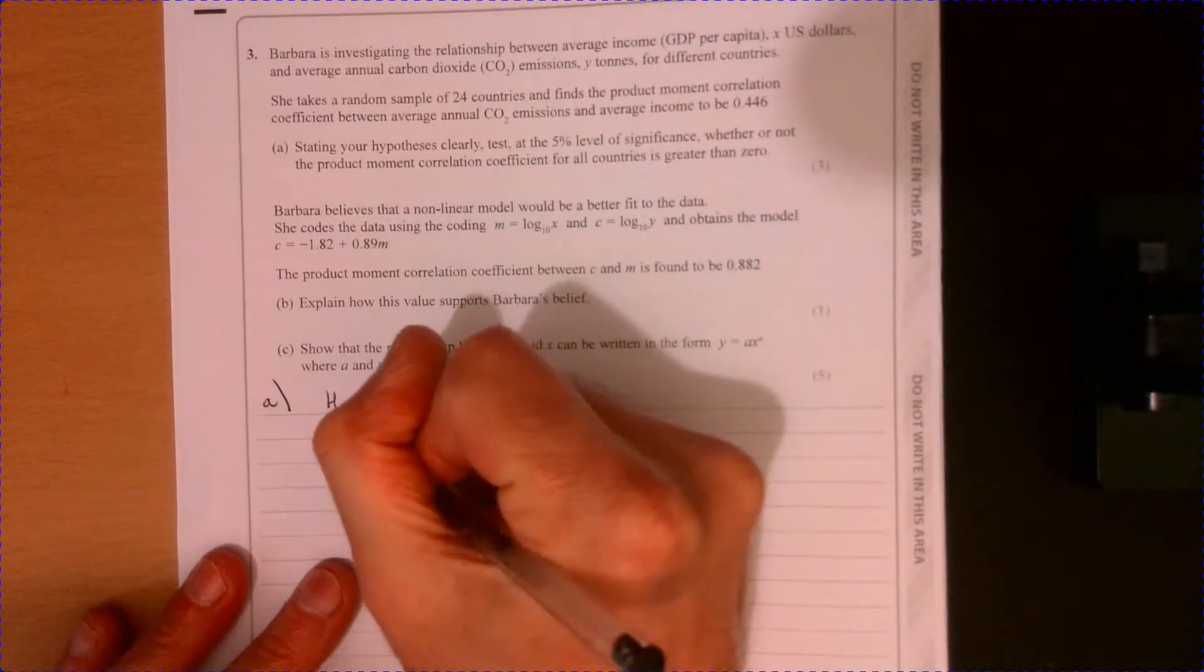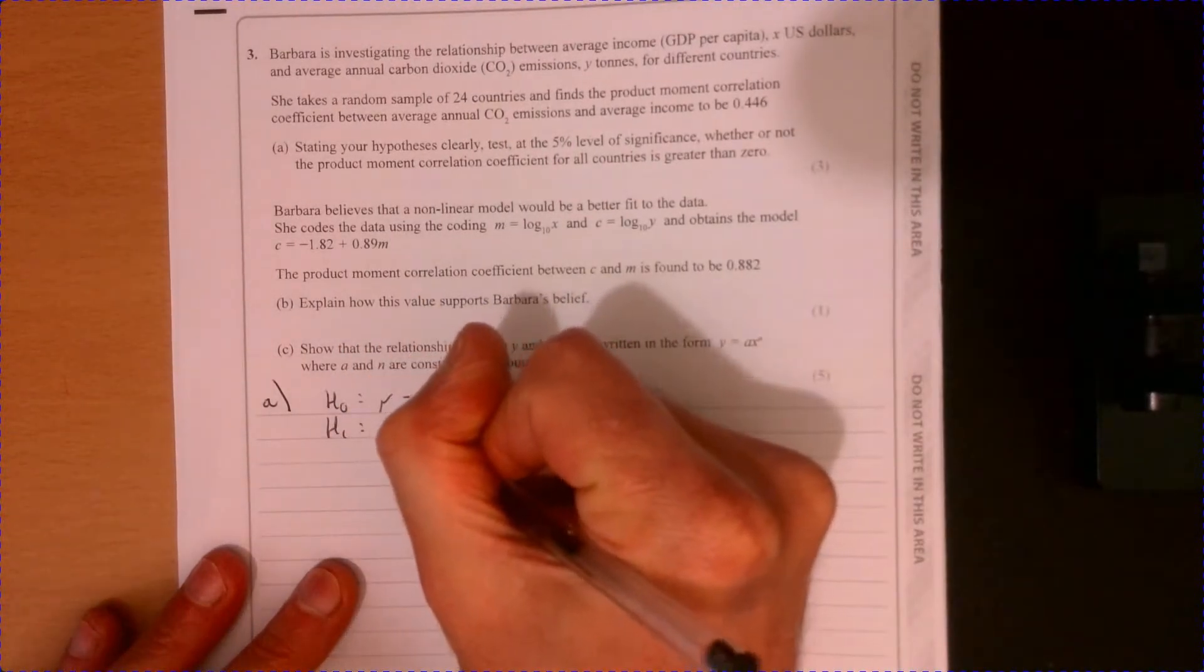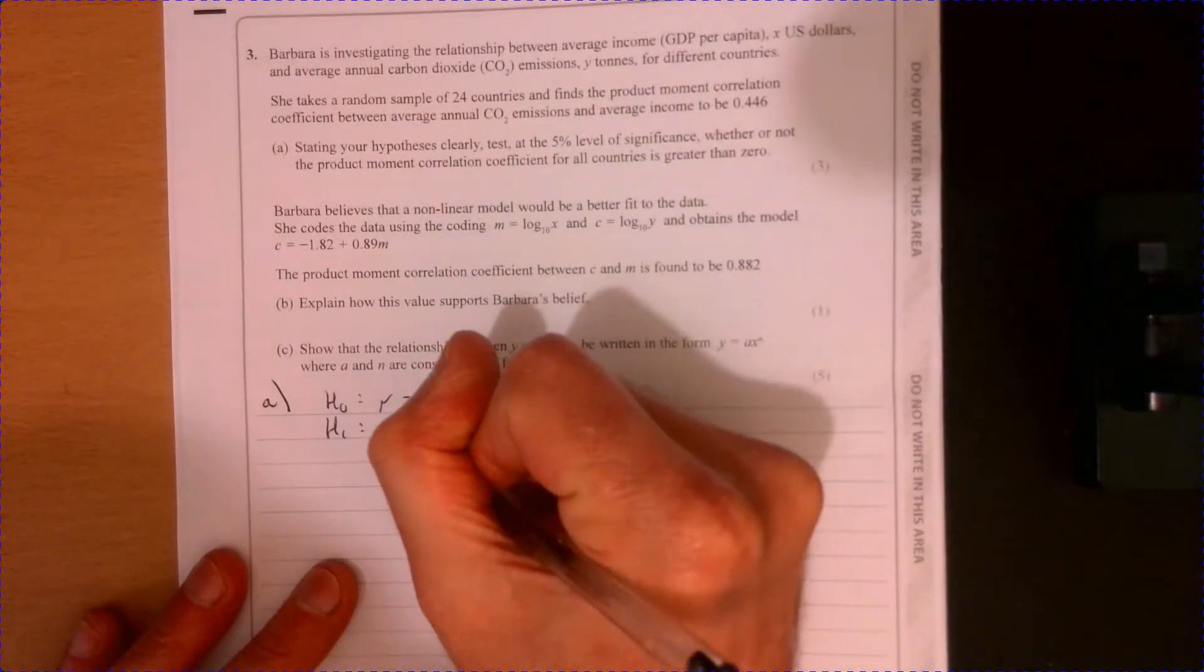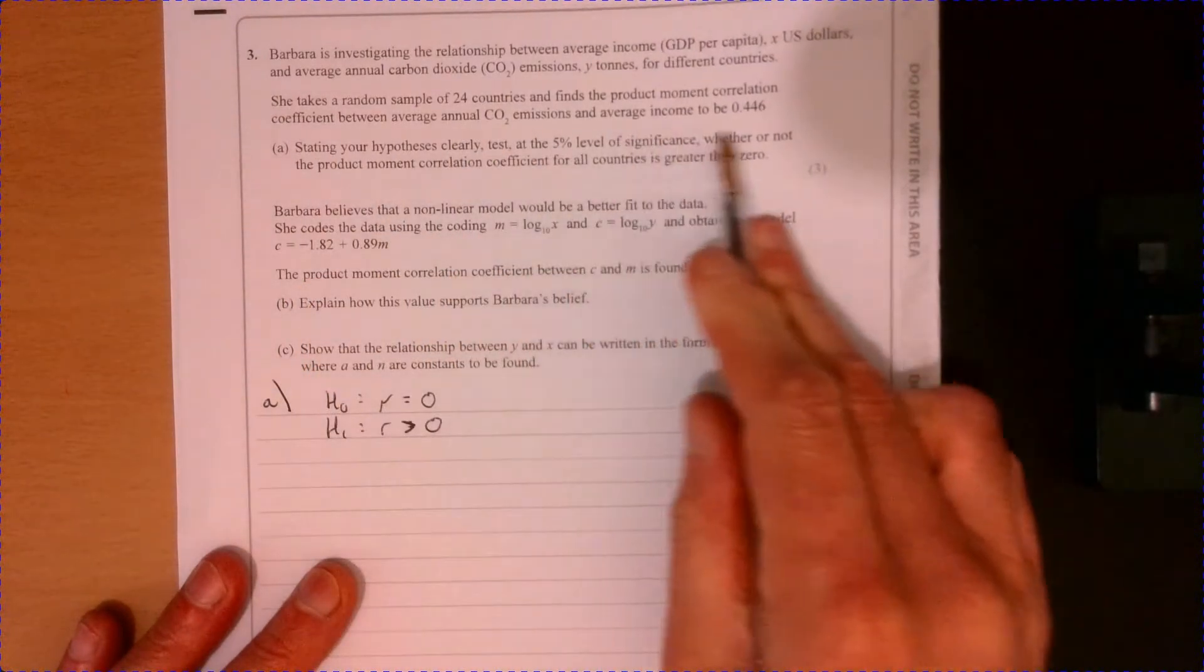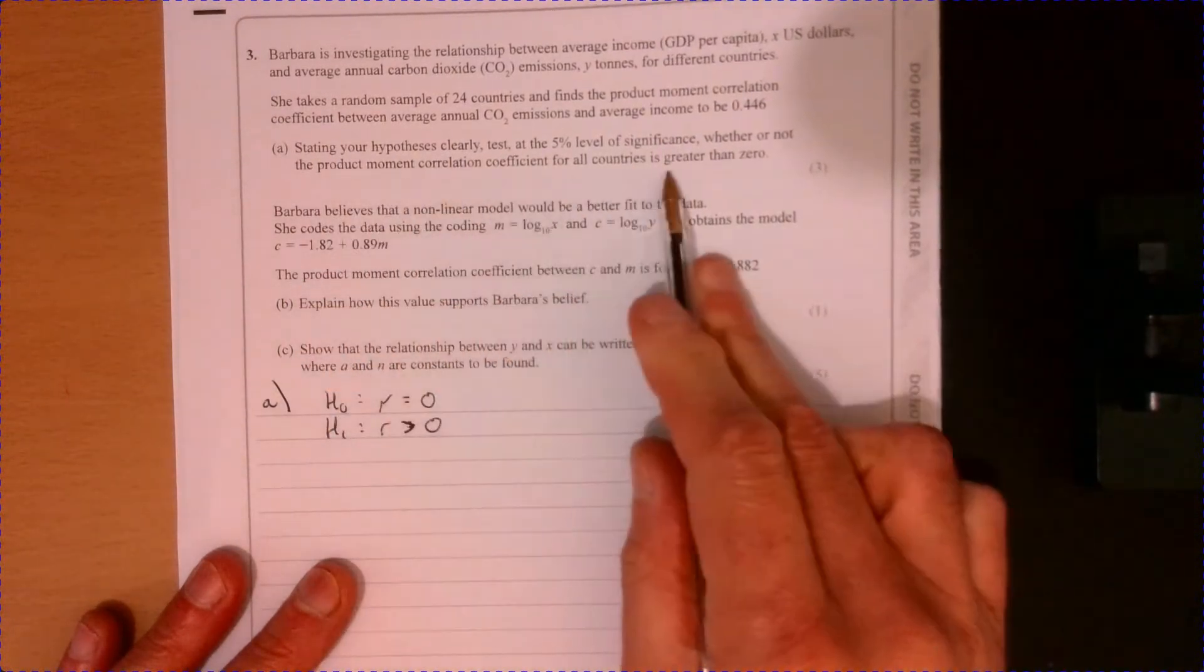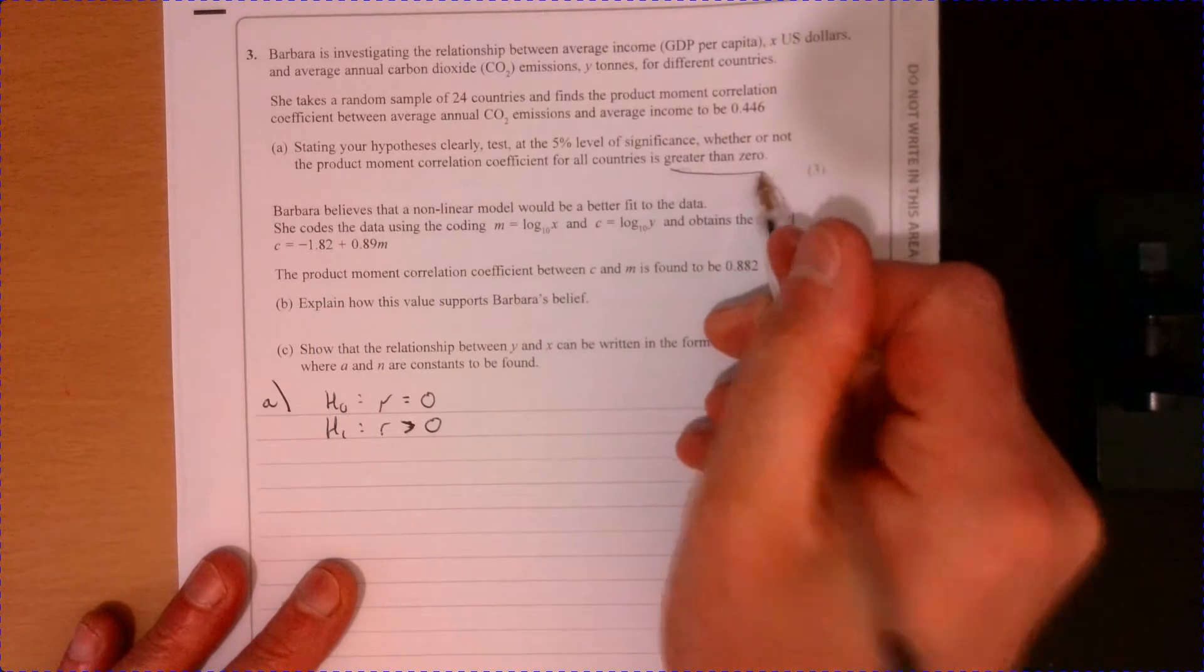And the alternative is that it's going to go. So it says it's more than zero. I've just got that just from reading the test just here. I'm interested in whether it's greater than zero.